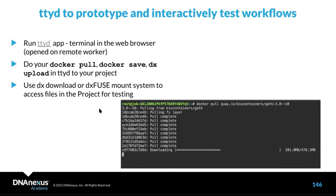TTYD is a terminal in the web browser opened in a remote worker — an app that runs on RAP. You get a terminal where you can do your Docker pull, Docker save, and dx upload directly into your project. TTYD is associated with your particular project, simplifying things. You can also do a lot of testing within TTYD, using dx download or dx fuse to access files in the project for testing at the command line.